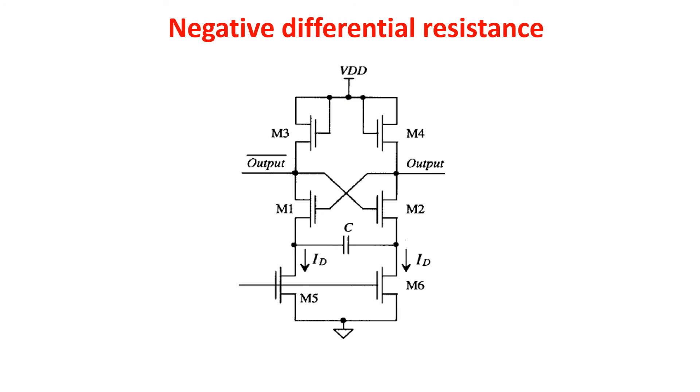As we saw, this property can be used to create oscillation. Indeed, you can see here the source-coupled voltage control oscillator, which exploits the differential negative resistance to create oscillation. I leave a link in the description for the working of this configuration.